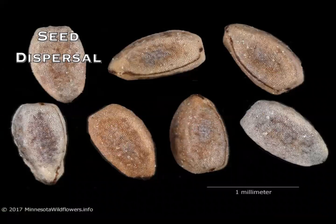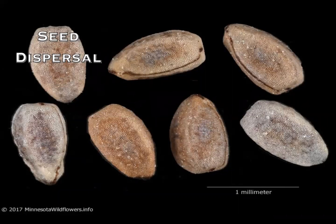Euphorbiaceae disperse their seeds through their schizocarp fruits. These fruits consist of multi-chambered capsules that burst open when ready to spread seeds. They explode with such force that the seeds may be ejected up to 15 feet away from the plant.